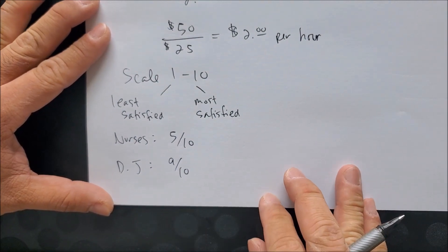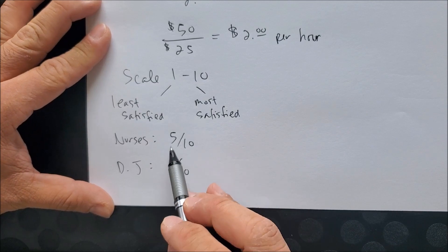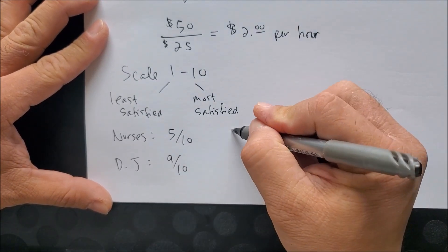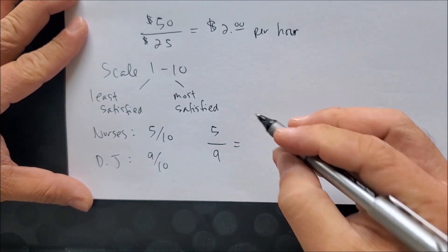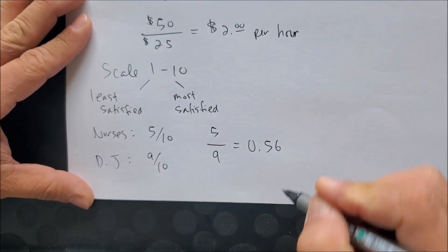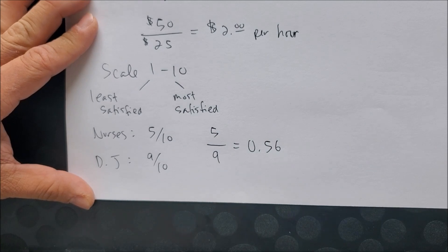Again, we can now plug in what we have: what you will sacrifice over what you will gain. By doing so, we have 5 over 9, which gives us 0.56 when you round off to the nearest hundredths.